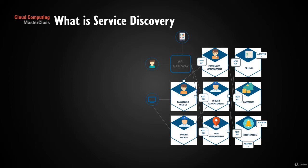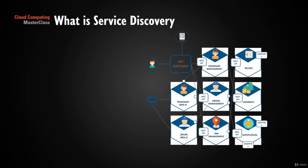The advantage of deploying onto the cloud is that you can take advantage of auto-scaling — a key concept from cloud — because you can practically utilize the whole public cloud platform for your applications. For example, if the passenger web UI needs multiple instances based on demand, it can scale up and down. But how will the API gateway discover those multiple instances? That is what service discovery addresses.